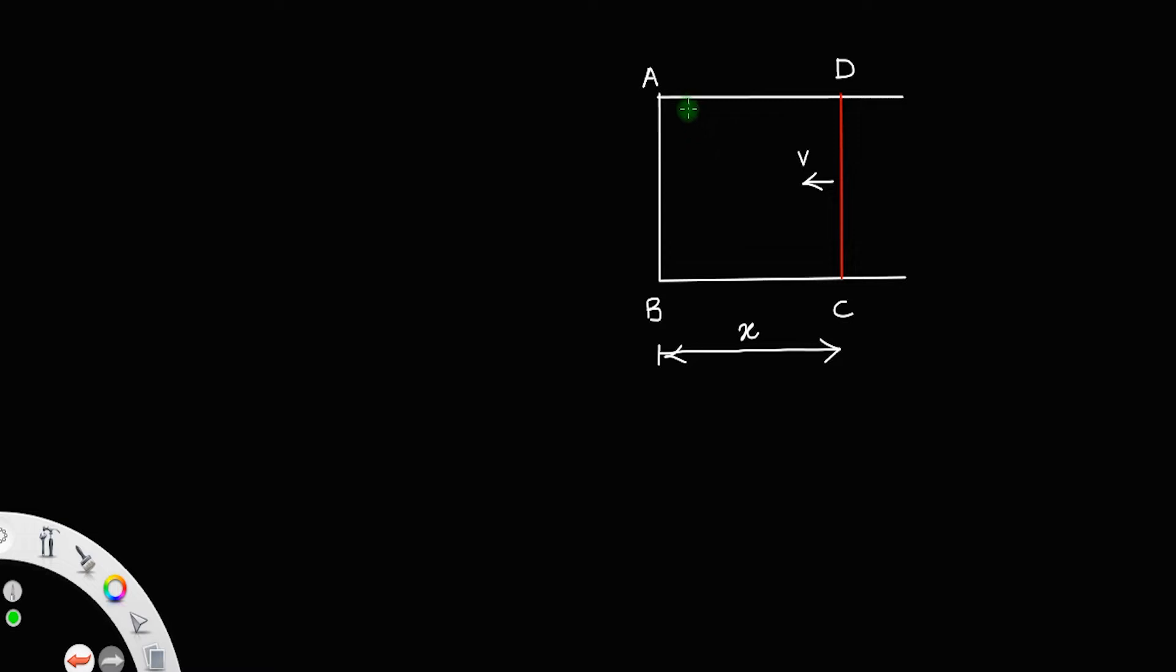And we have a magnetic field directed into the plane like this. This crossmark represents we have a magnetic field into the plane of paper, and let that magnetic field be of uniform strength.